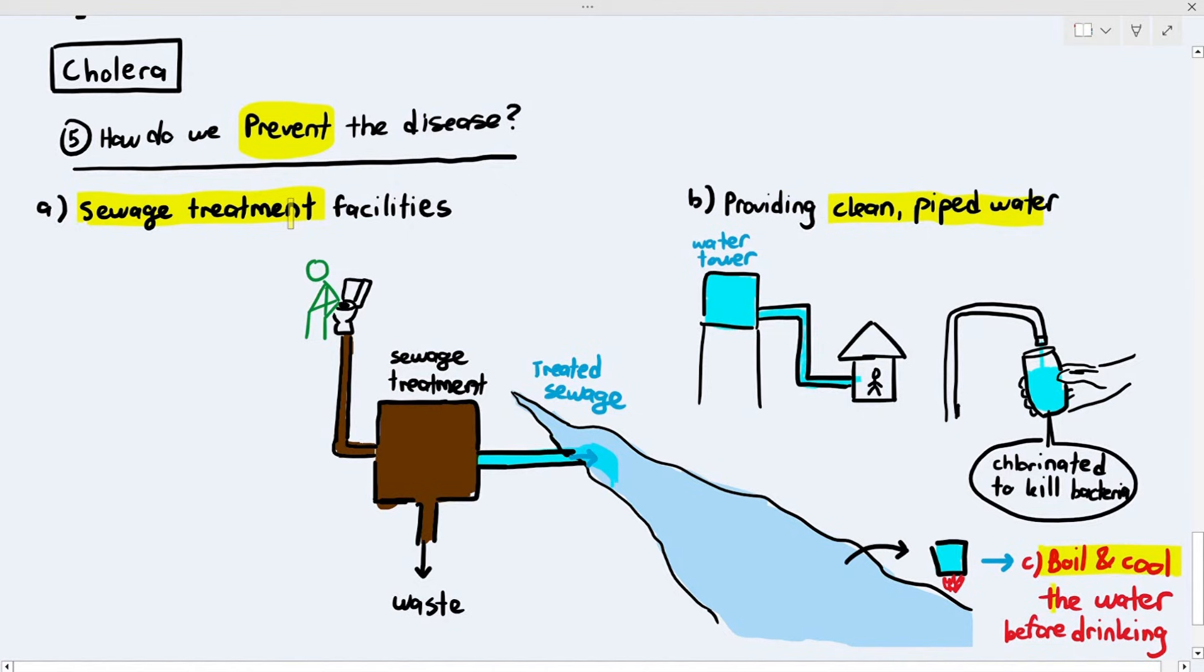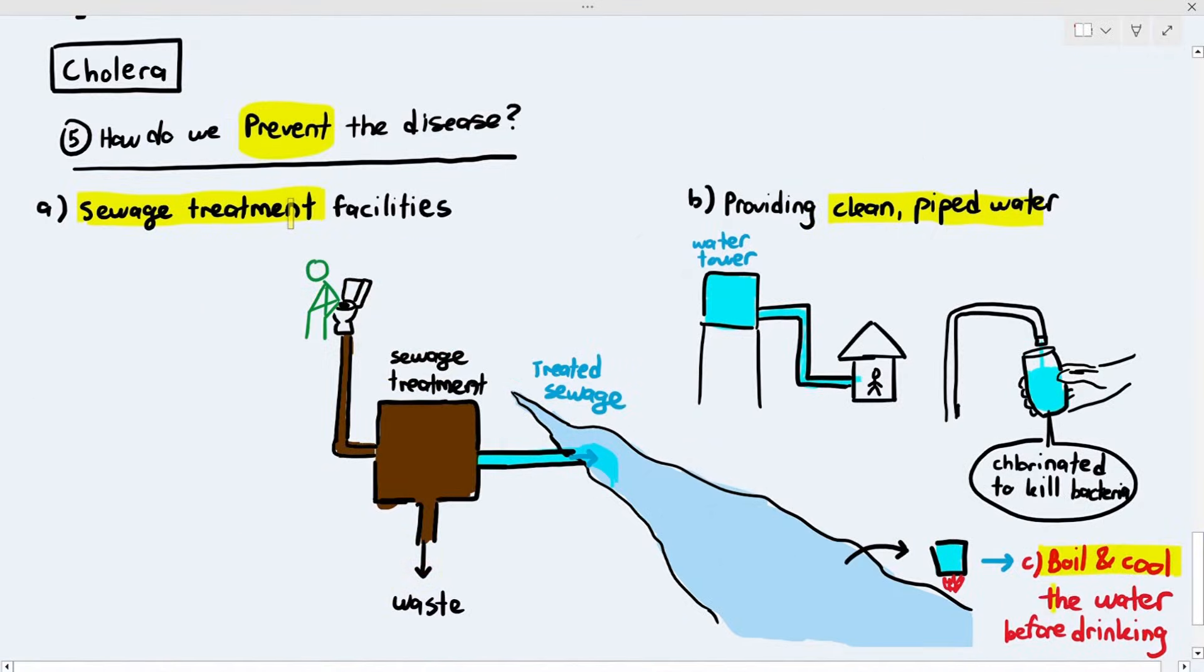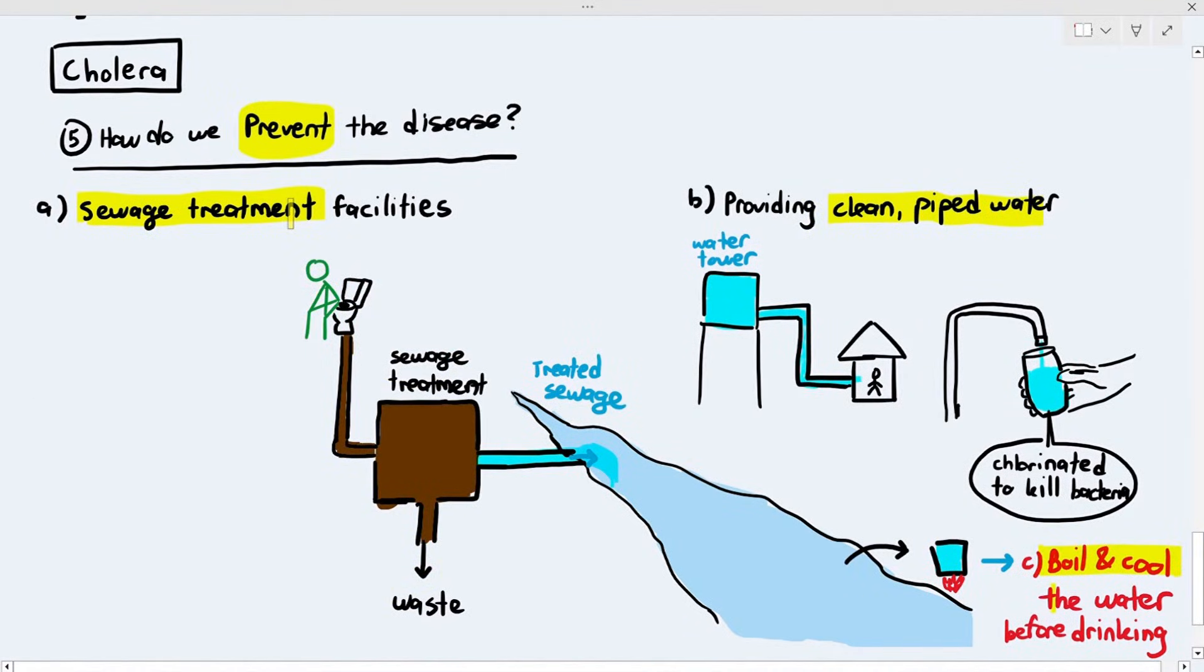Now, with that being said, we understand that if a person has cholera, we can treat them with fluid replacement therapy and antibiotics and we can also prevent the disease by using sewage treatment and providing clean piped water or boiling the water as well before drinking. So, then comes number six. Why can't we eradicate this disease?